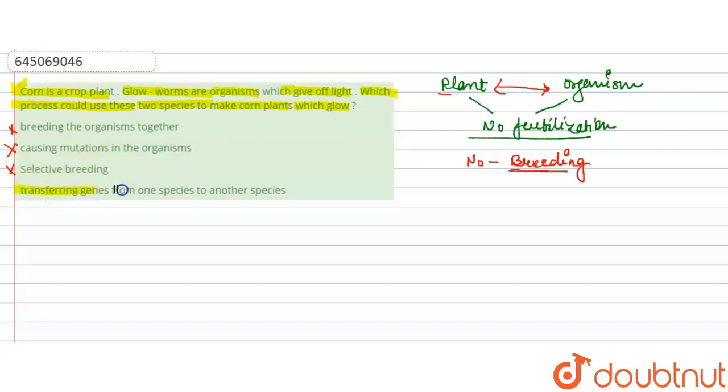That is transferring genes from one species to another species. This process is done. The crop plant, the corn plant, is joined with the glowworm organism with the help of transferring gene from one species to another species. This is a biotechnological technique.